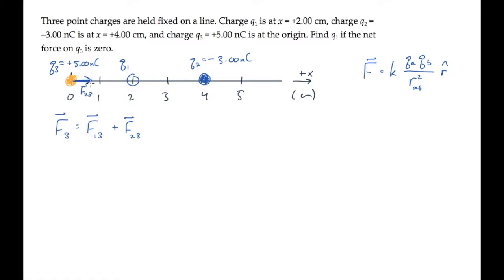It's directed from charge 3 toward charge 2. If the net force is to be zero, the force exerted by 1 on 3 must be in the opposite direction, and have the same magnitude.